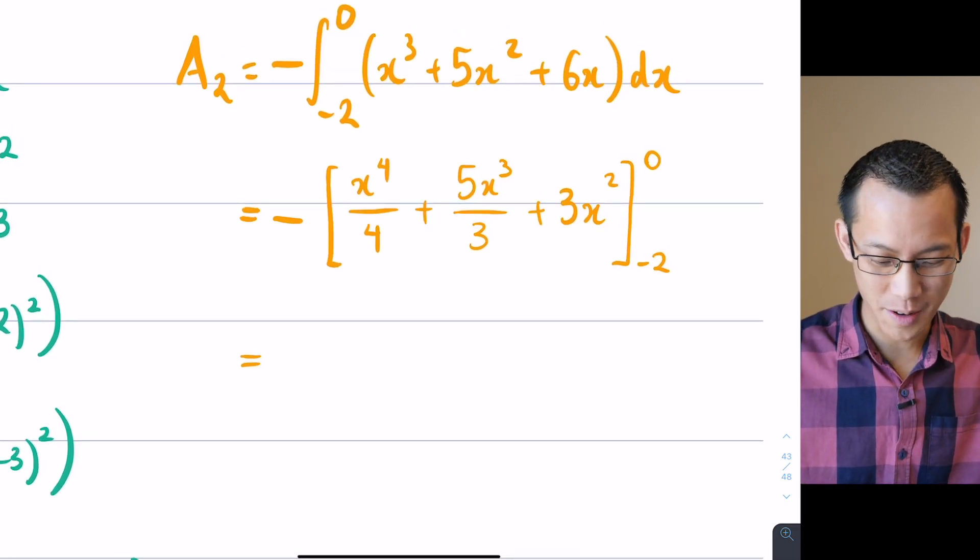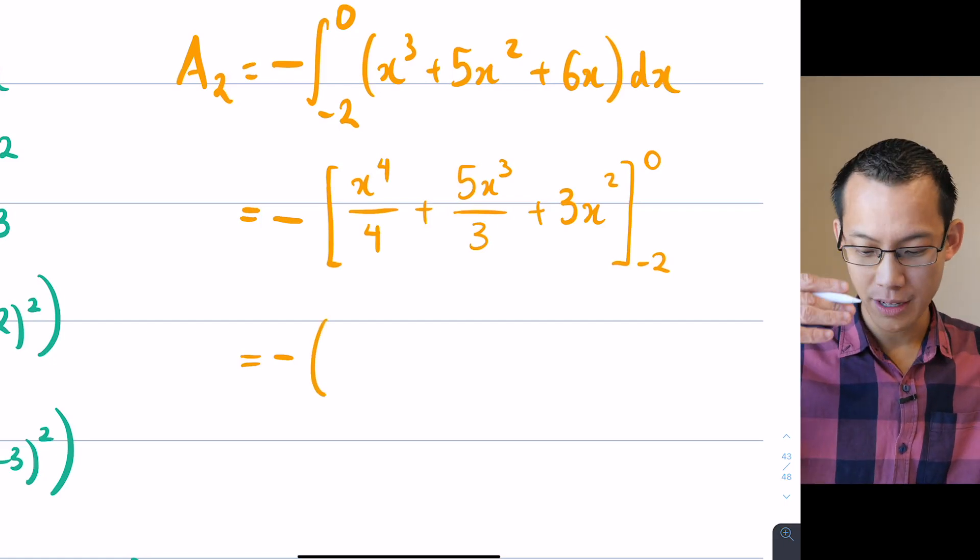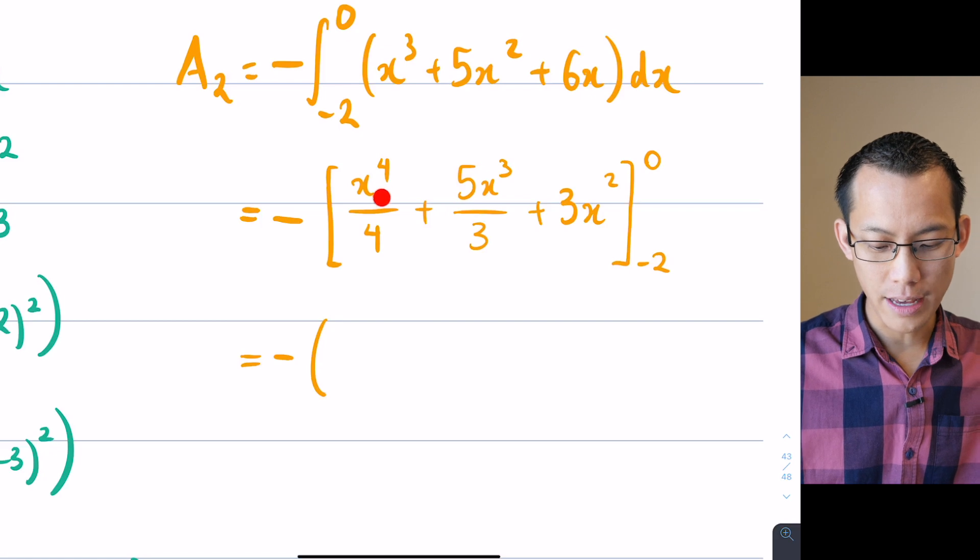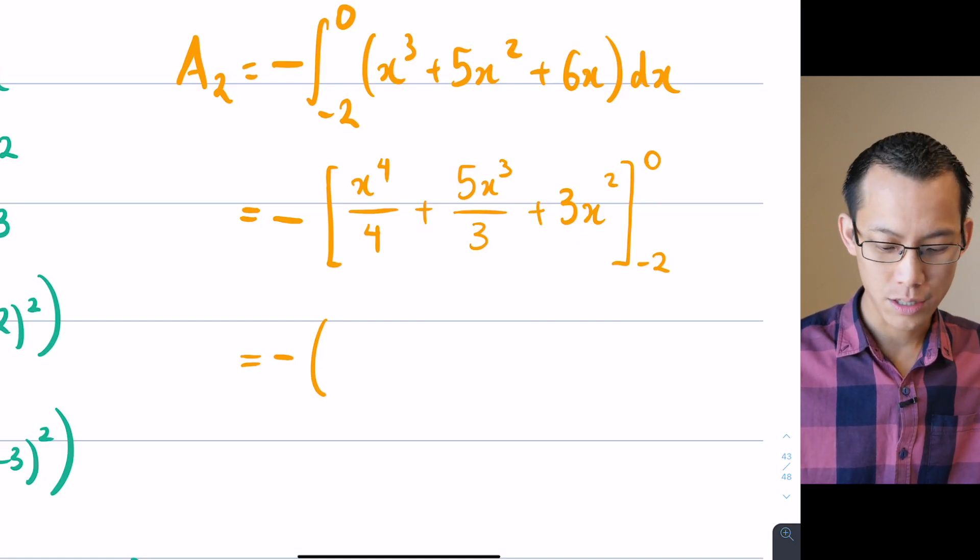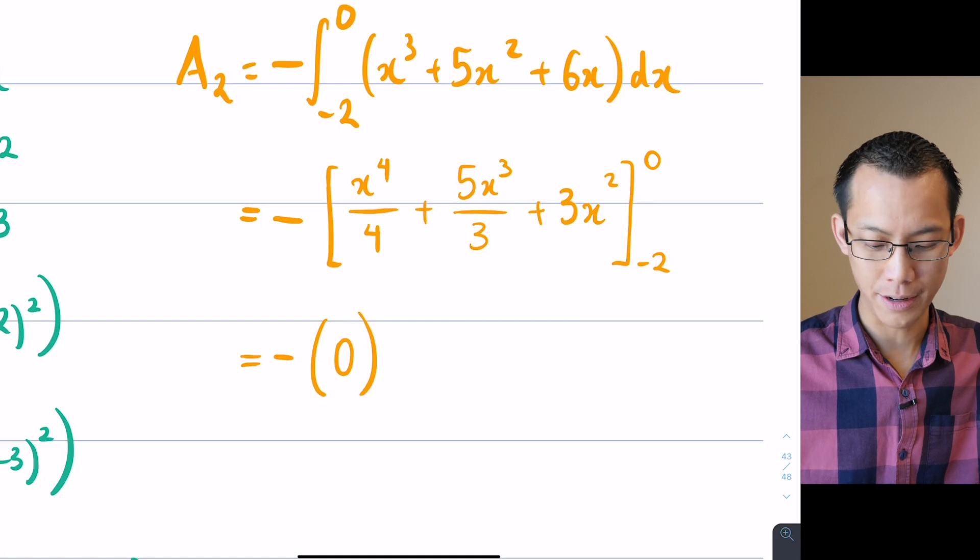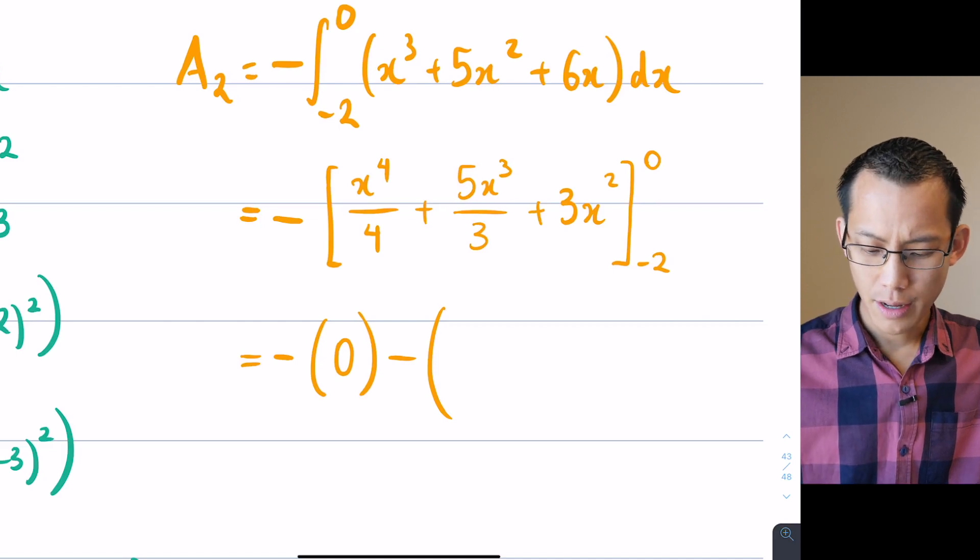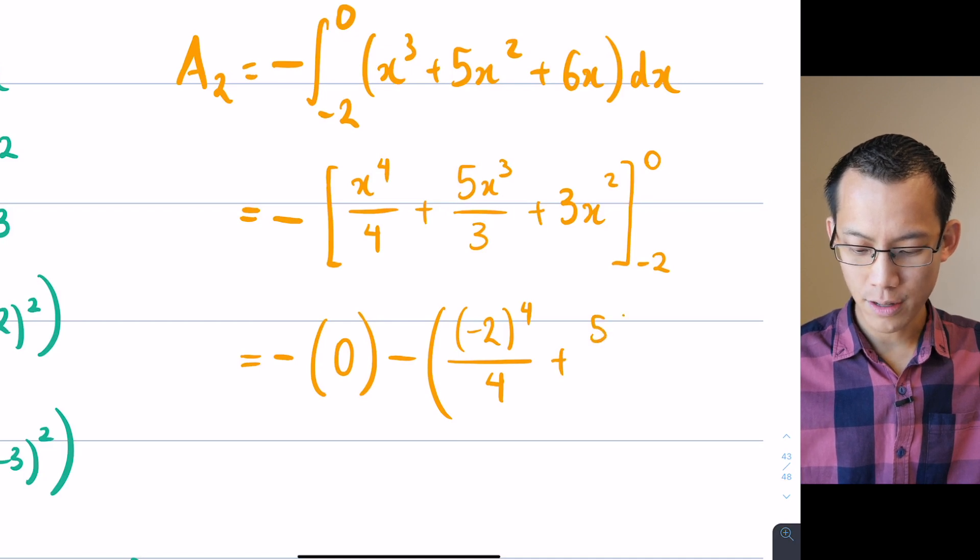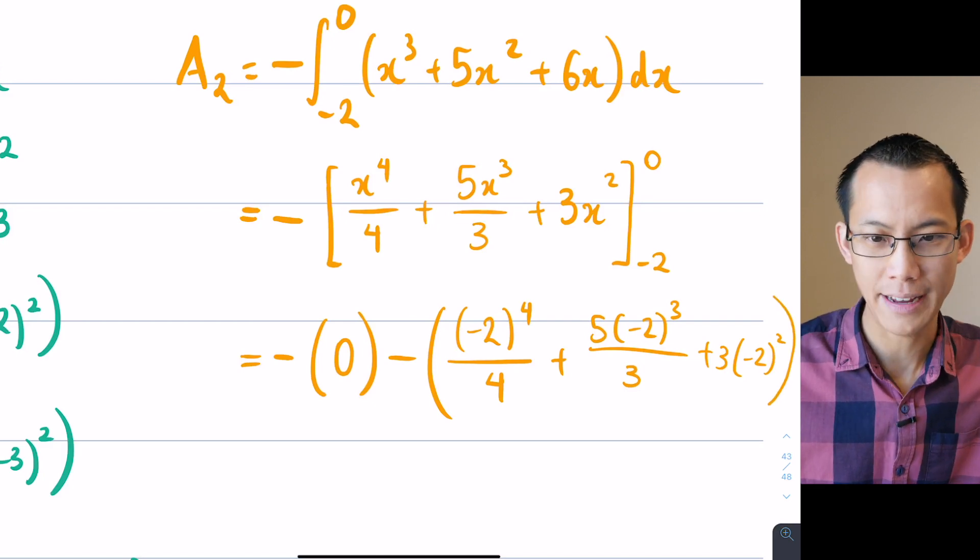Okay, I'm going to evaluate this now. So I've got my negative sign still out the front. What am I going to get in here? Well, I go top boundary, take away bottom boundary. Now, in this case, my top boundary is 0. And I've got, looking carefully, I've got a 0 to the 4 here, which is going to become 0. I've got a 0 cubed, I've got a 0 squared, all becoming 0. So I get a 0 here. There's my upper boundary. And then I subtract my lower boundary. Okay, let's have a go here. So I've got negative 2 to the power of 4 on 4. I've got 5 lots of negative 2 cubed, all on 3. And then I've got 3 lots of negative 2 squared, close bracket.